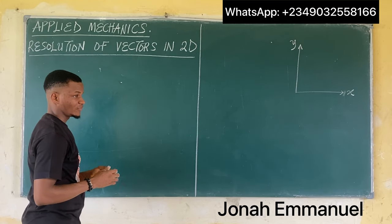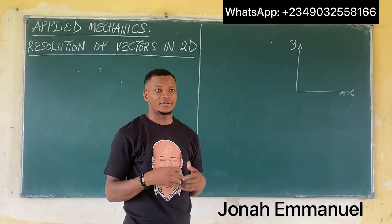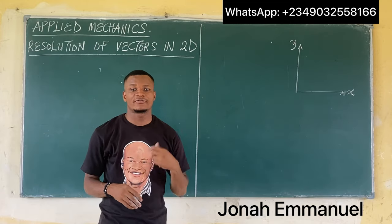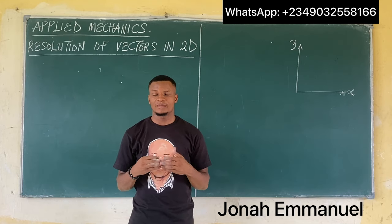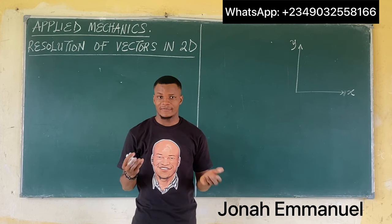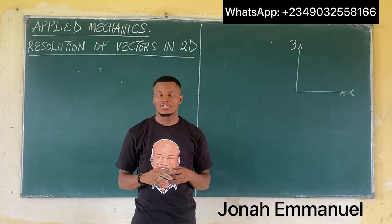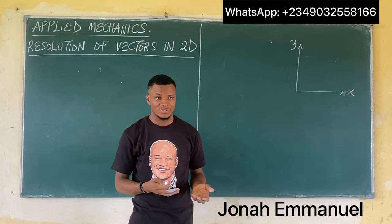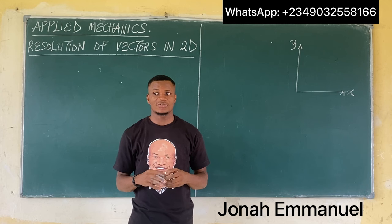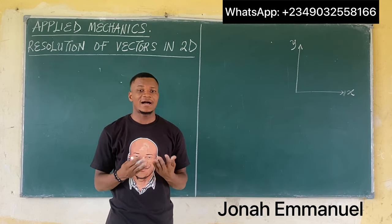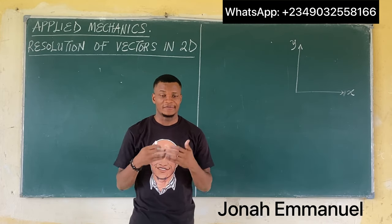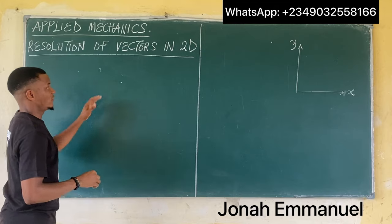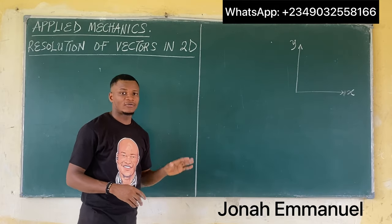How do we resolve vectors in 2D? There are some things you have to note. When it comes to resolving vectors, vectors could include any parameter that has magnitude and direction, such as force, displacement, acceleration, and velocity. So we can resolve any vector. In most cases you see force — we are asked to find the resultant of a force — but it doesn't mean that force is the only vector. Sometimes we are asked to find the resultant of displacement, velocity, or acceleration. Any vector at all can be resolved in 2D.